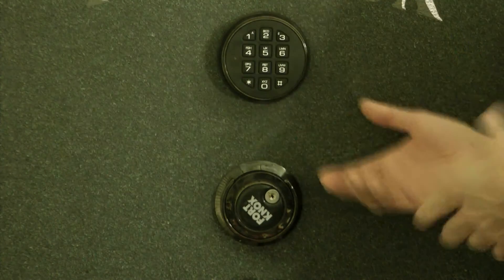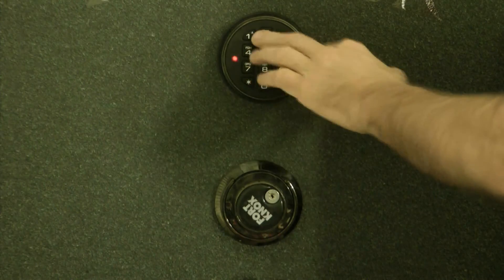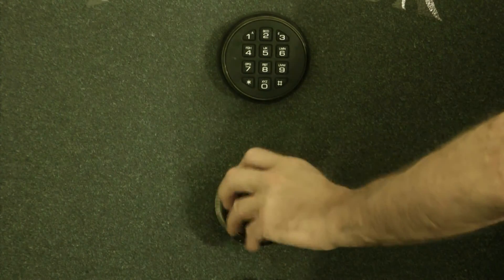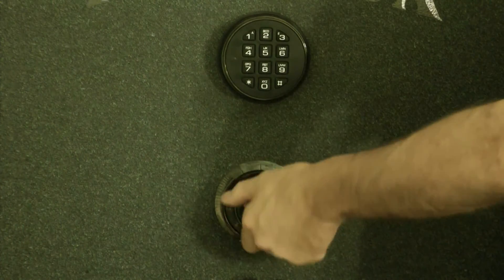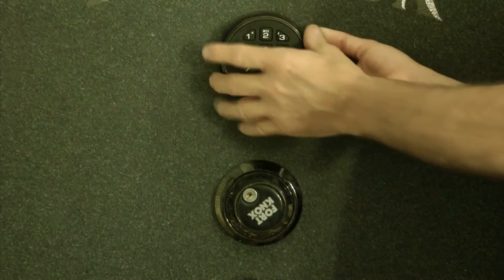Electronic lock is very easy to open, very simple. Just press a few buttons, you can open your lock here. You have your standard combination. You have to go left and right, left and right. These are just super fast, but they do require batteries.